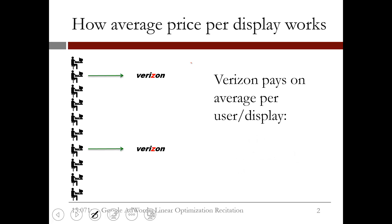If we consider how much Verizon paid to Google on average per user, or equivalently, how much Verizon paid per display of the ad, we just divide the total amount of $50 by the 10 users who saw the ad. Doing this, we see that the average price per display was $5.